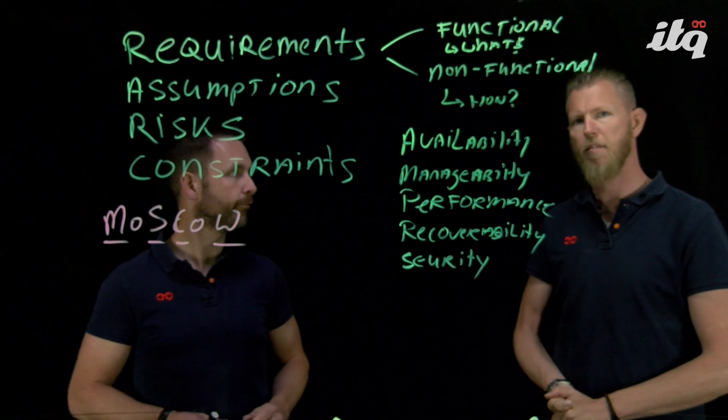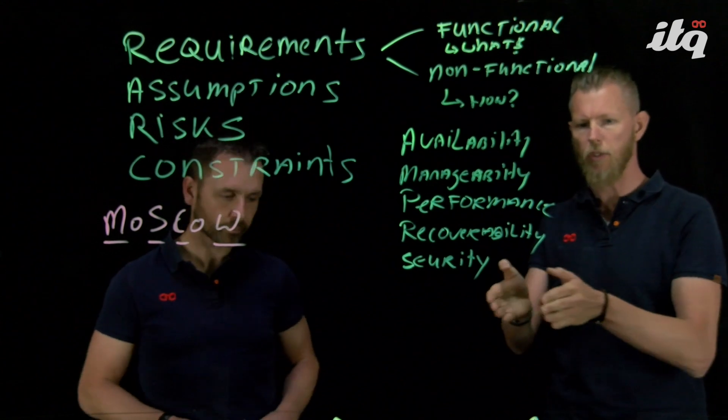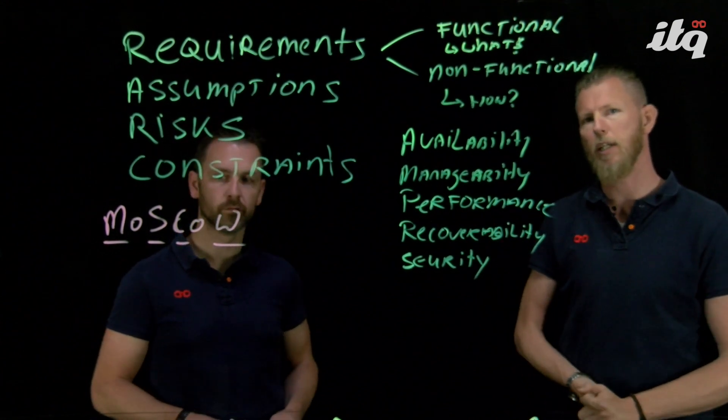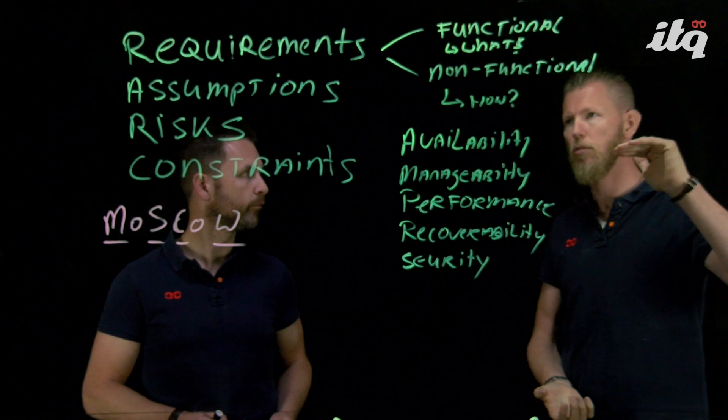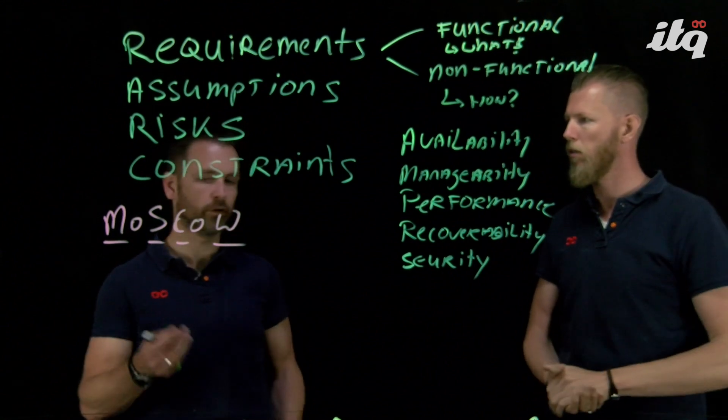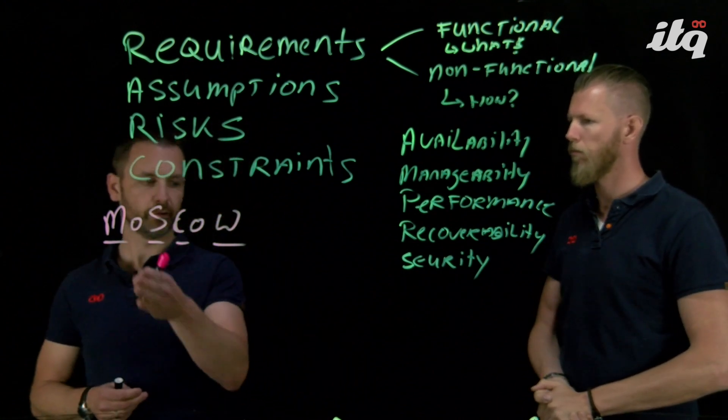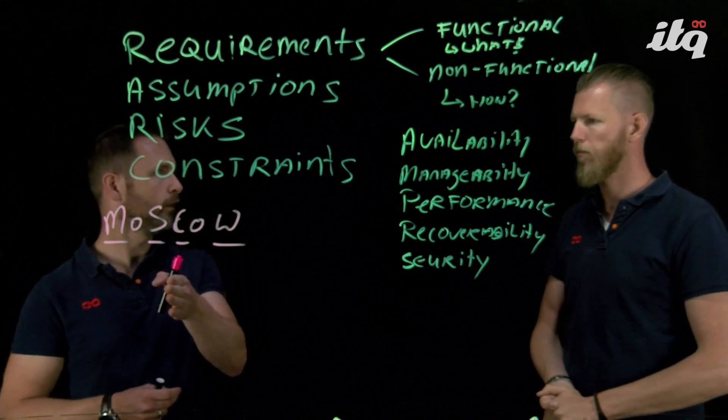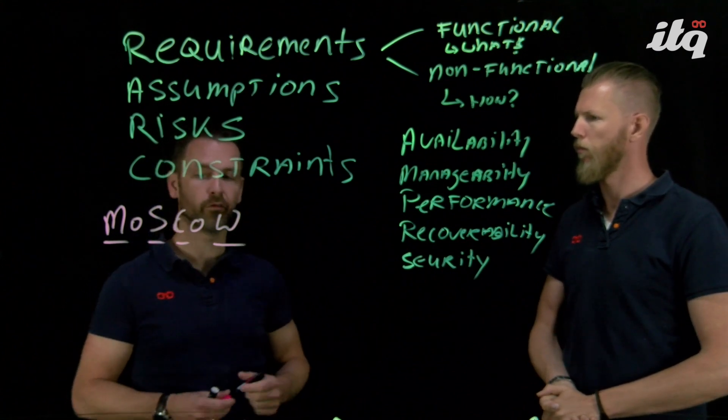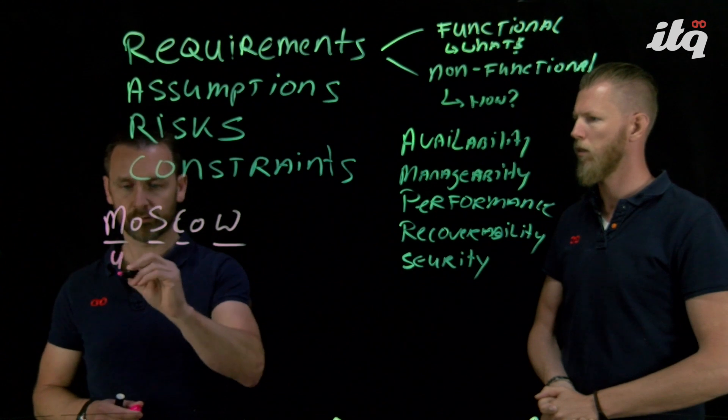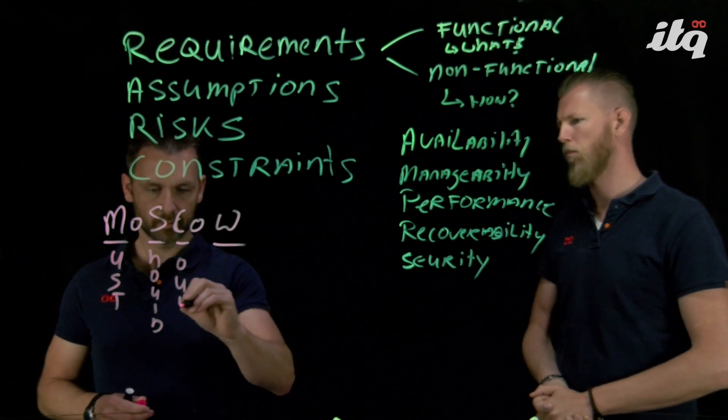The must-have specifically dictates that this requirement must be part of the design, so you won't be able to deviate from that requirement. In whatever the scenario, whatever the situation, if you classify a requirement as a must-have, then you need to meet that requirement always. A should-have is kind of a guideline - it would be great if this is part of the infrastructure, of the design, but there is some room for negotiation.